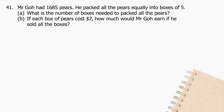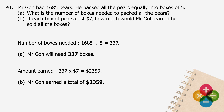Question 41: Mr. Go had 1,685 pears. He packed all the pears equally into boxes of 5. A. What is the number of boxes needed to pack all the pears? The number of boxes needed will be 1,685 divided by 5, and the quotient is 337. Mr. Go will need 337 boxes. B. If each box of pears costs $7, how much would Mr. Go earn if he sold all the boxes? The amount of money earned will be 337 multiplied by $7, and the product is $2,359. Mr. Go earned a total of $2,359.